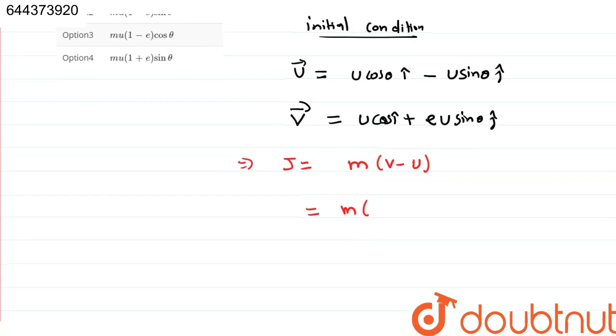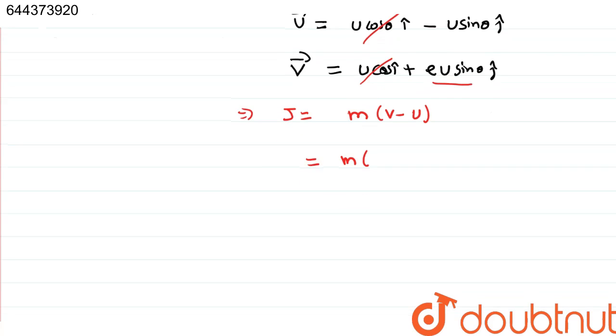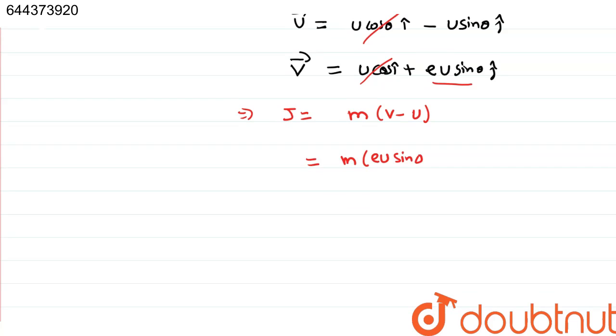So, v minus u, just you have to do v minus u. This horizontal component will get cancelled u cos theta u cos theta. So, only we get e u sin theta minus minus u sin theta.